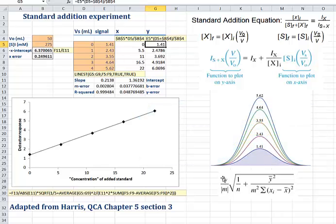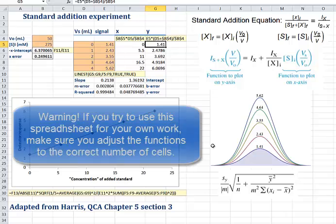Notice how it needs the standard error in y, which we got from our LINEST, the slope that we got from our LINEST, and the number of points, in this case 1, 2, 3, 4, 5.